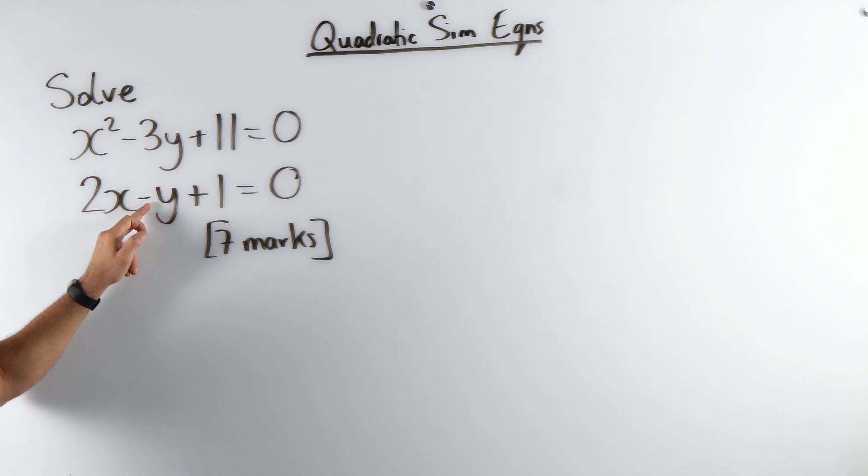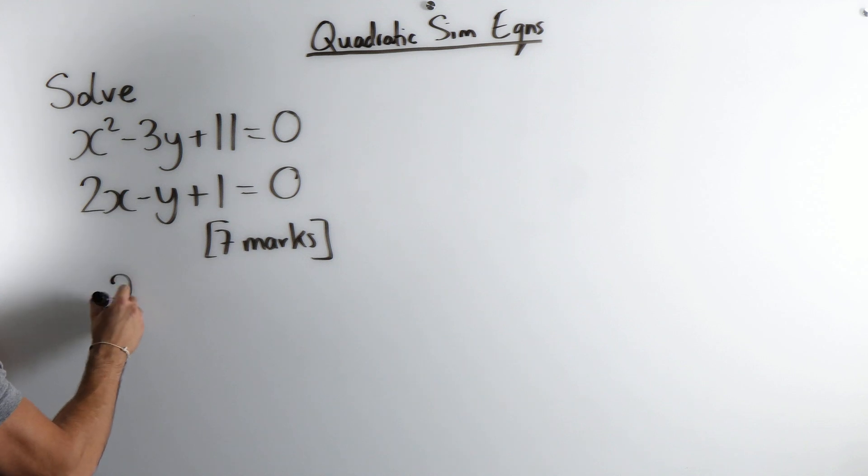Now here the y is clearly the easier one to rearrange for because its coefficient is 1. Forget about the minus for a second, the absolute value is 1. So we take the minus y and move it to the other side. A negative y on the left is a positive y on the right. So we'd be left with 2x plus 1 equals y. This is known as the subject equation.